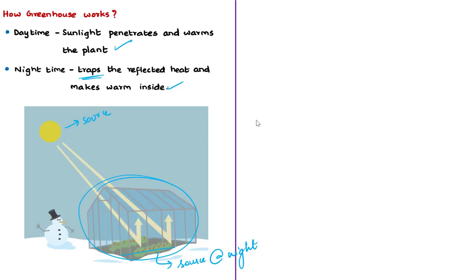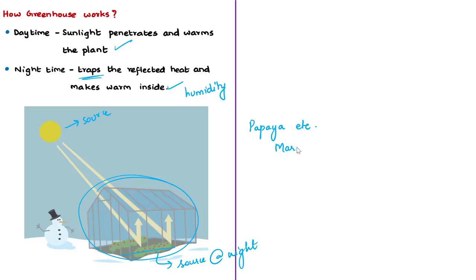Apart from temperature, greenhouse farming also helps in maintaining the right carbon dioxide levels and humidity or moisture level inside the structure. Some of the crops cultivated in polyhouses include papaya, strawberry, cabbage, spinach, tomato, and even flowers like marigold and orchid.